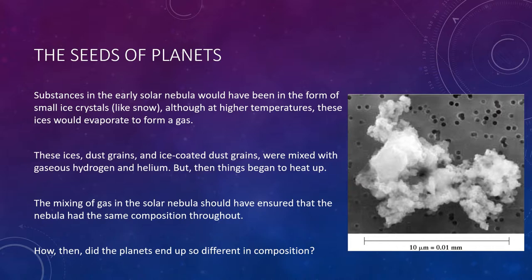At the low pressures that prevailed, a substance does not form into a liquid state—it must exist either as a solid or gas. This highly magnified image shows a microscopic dust grain from interplanetary space, collected from Earth's upper atmosphere by a high-flying aircraft. Dust grains of this sort are abundant in star-forming regions and were also abundant in the solar nebula, serving as the building blocks of planets.